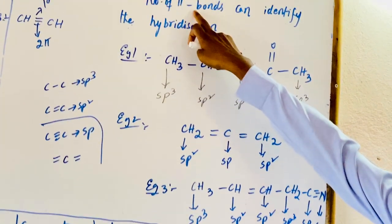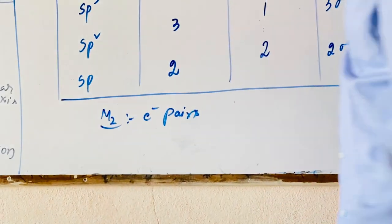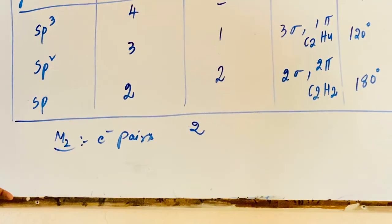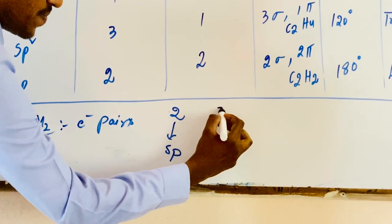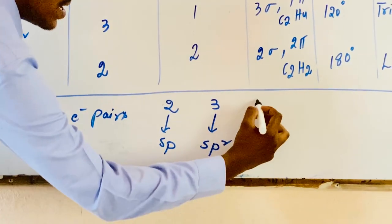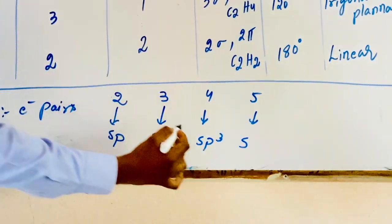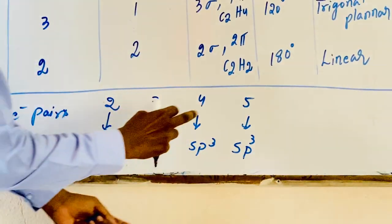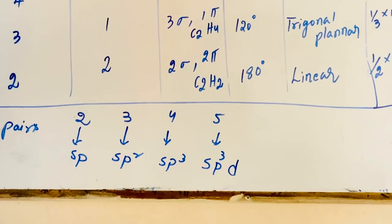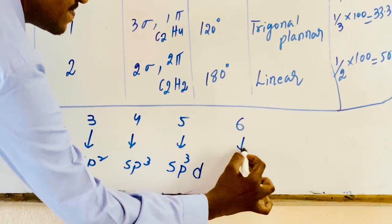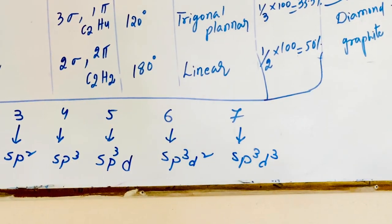Method 2 for identifying hybridization is based on electron pairs (electron planes). If electron planes are 2: hybridization is sp. If 3: sp2. If 4: sp3. If 5: sp3d. If 6: sp3d2. If 7: sp3d3.